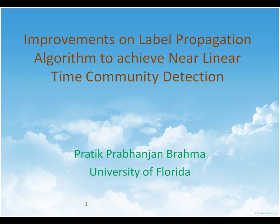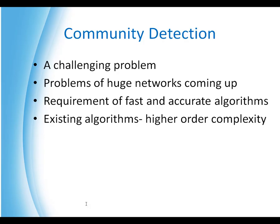Hi, this is Pratik and I'm going to talk about improvements on the label propagation algorithm, with our objective being to achieve near-linear time community detection. Given a huge graph, our main objective is to find community structures — groups of similar nodes. This is a very challenging problem because networks today are so huge that you require a very fast and accurate algorithm, and existing algorithms suffer from very high order complexity.